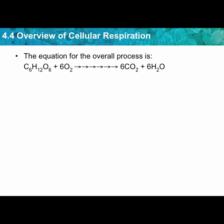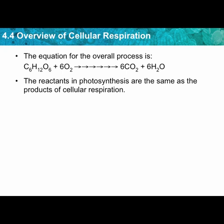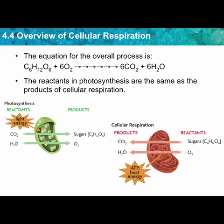The overall equation is: one glucose molecule plus six oxygens yields six carbon dioxide, six water molecules, and a lot of ATP. The reactants of photosynthesis are the same as the products of cellular respiration, so they form a cycle themselves, as we'll see in the next unit. In photosynthesis, you add carbon dioxide and water and get sugar and oxygen; in cellular respiration, you start with sugar and oxygen and end up with carbon dioxide and water.